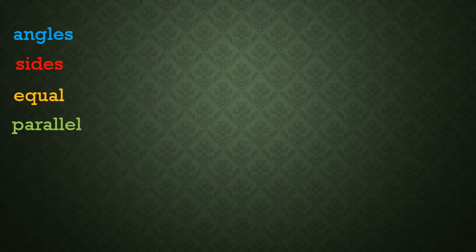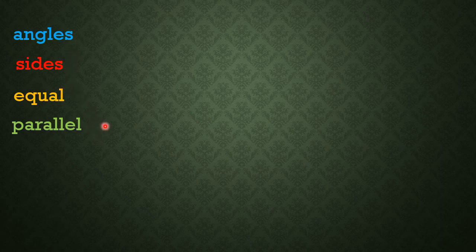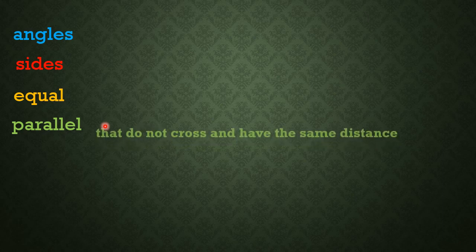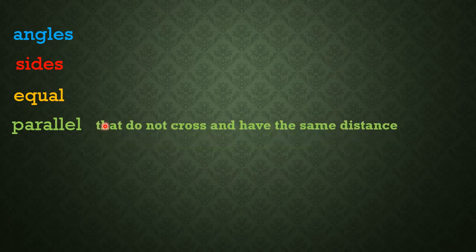To describe 2D shapes, you should be able to use these words: angles, sides, equal, and parallel. Parallel sides or lines are sides or lines that do not cross and have the same distance.